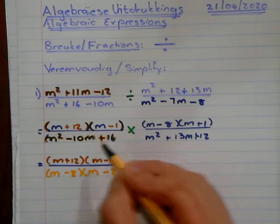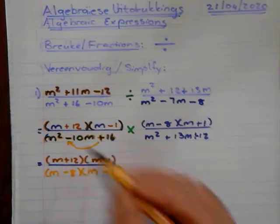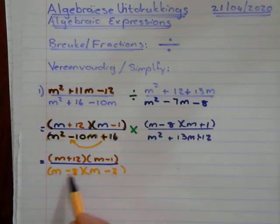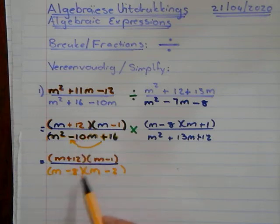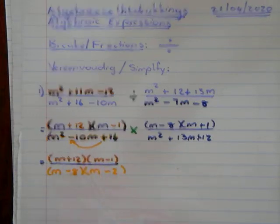We're going to have M minus 8 and M minus 2. Of course, if this is positive, both signs will be negative. 8 times 2 is 16, minus 8 minus 2 is minus 10.